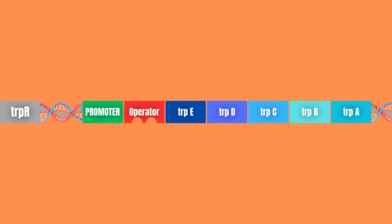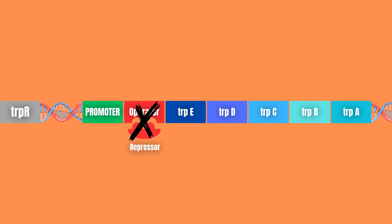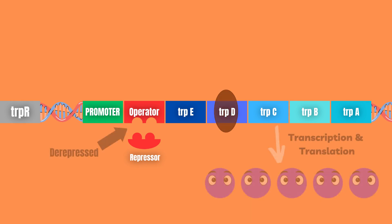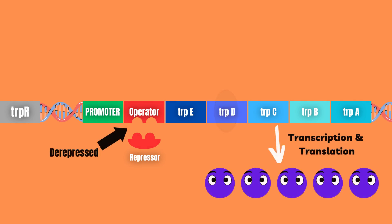The regulatory gene TRPR encodes an inactive repressor. In this inactive form the repressor cannot bind to the operator, and therefore the RNA polymerase can freely transcribe the genes into mRNA that are then translated into the enzymes that help make tryptophan.